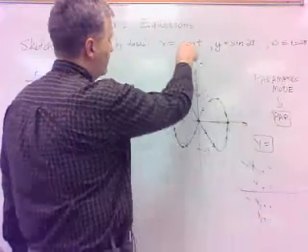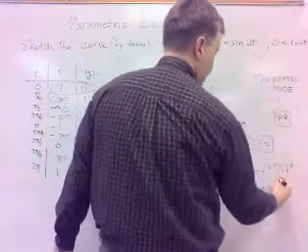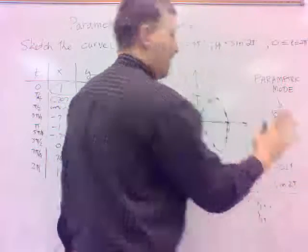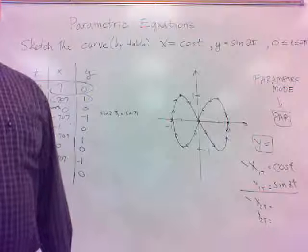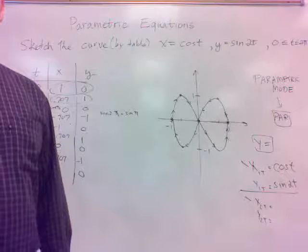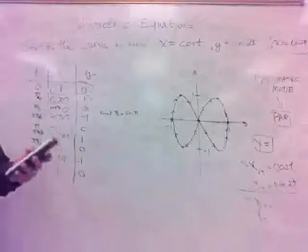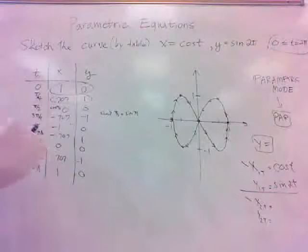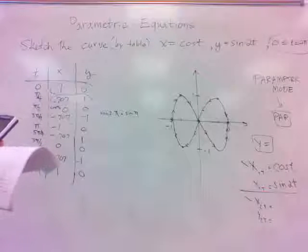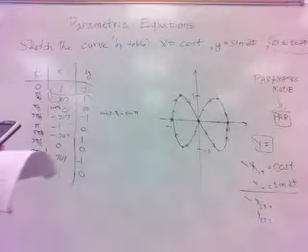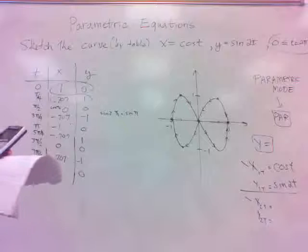Let's check our little work here. Let's do x1t is cosine t, and y1 is sine 2t. Cosine t, and to get the t, you just hit the x button. It'll put in t if you're in parametric mode. And then we do sine of 2t.